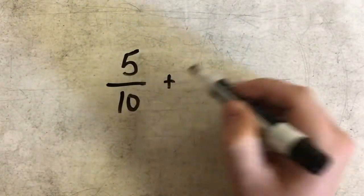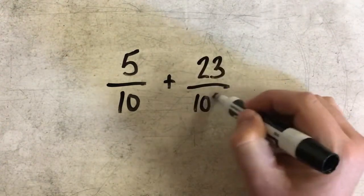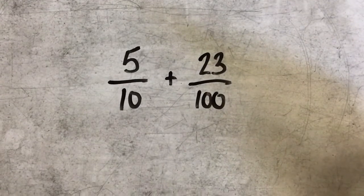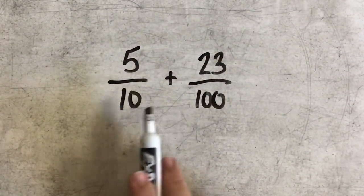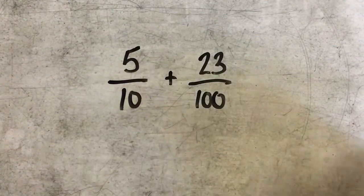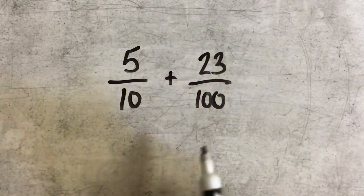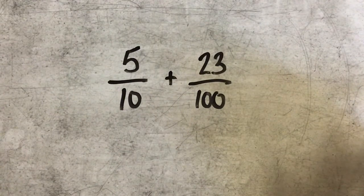So if I had a problem like 5 tenths plus 23 hundredths, the rule of fractions tells me that I cannot add two fractions that have unlike denominators or different denominators. In this case I have a denominator of 10 and a denominator of 100. Before I add these two, I need to have both of the denominators be the same number.